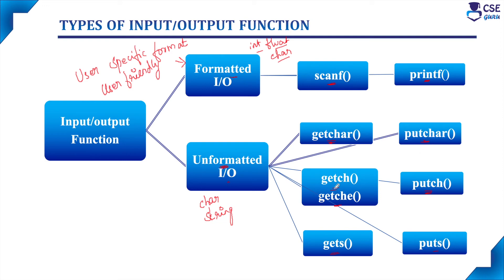The getch function reads a character from the keyboard without echo, meaning the typed character will not be visible on the screen. The getche function reads a character from the keyboard with echo. The entered character is stored in the memory location. The putch function displays the character stored in the memory location.